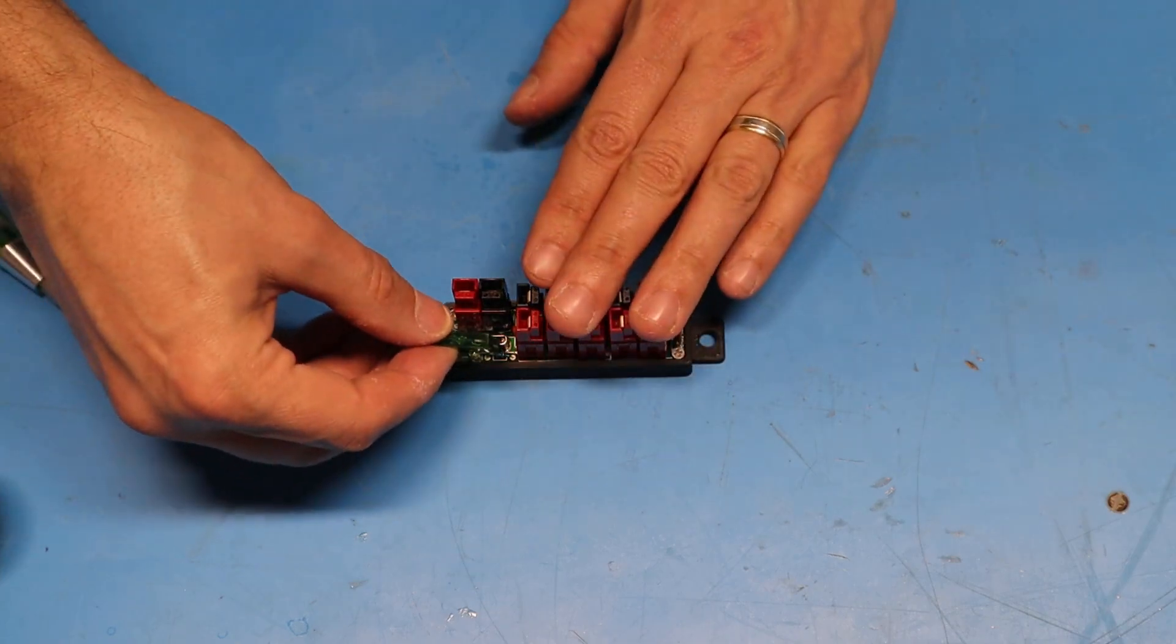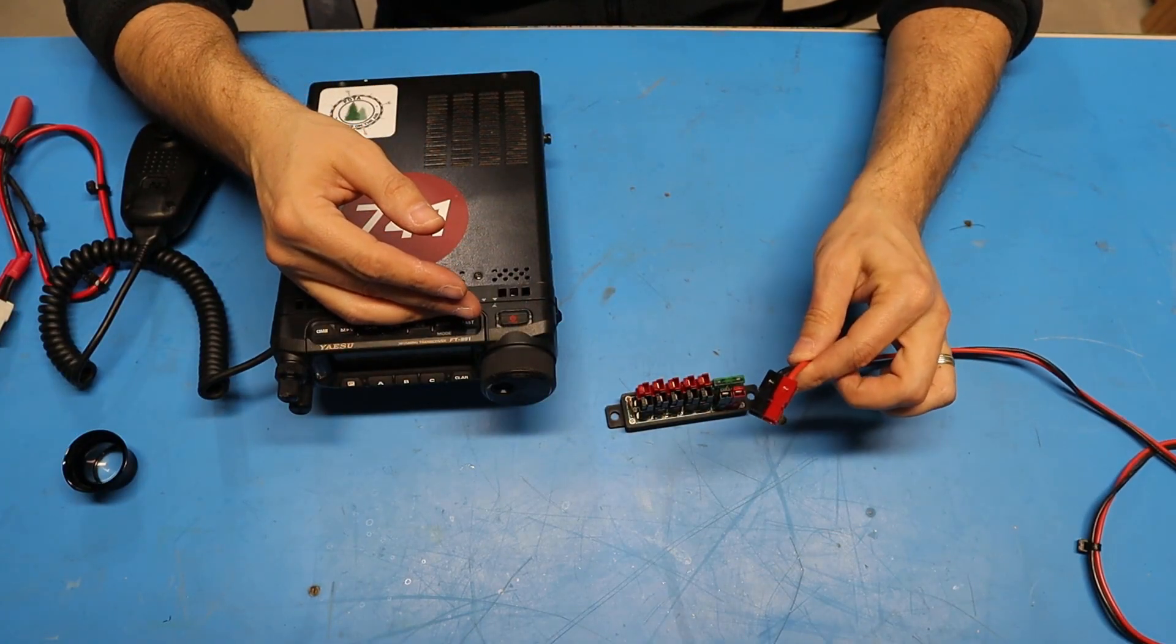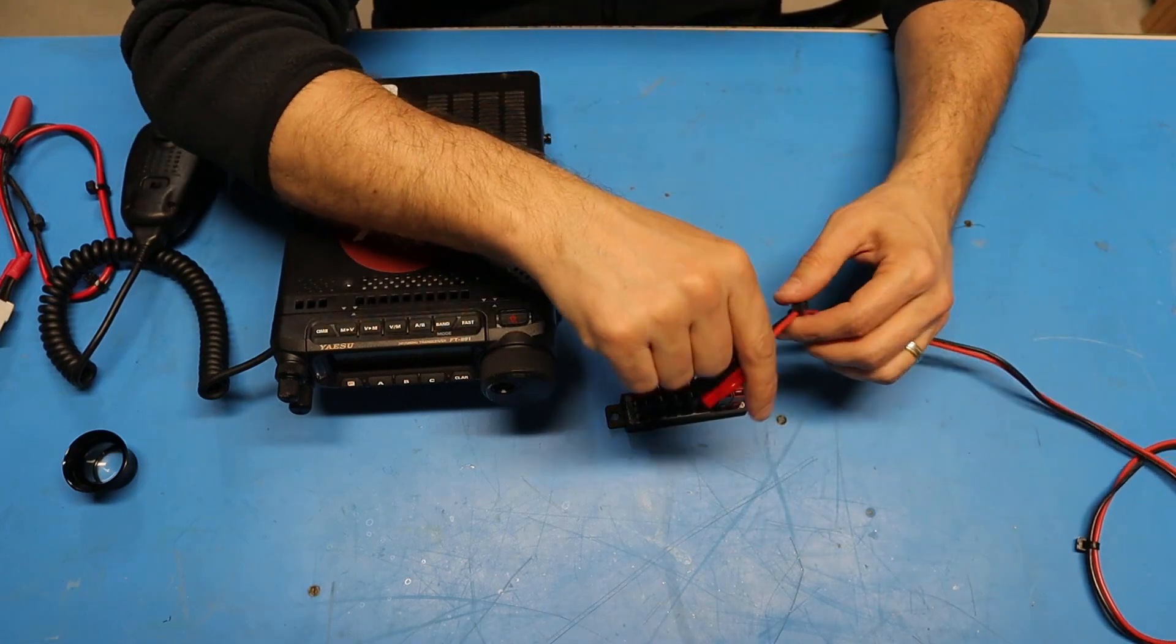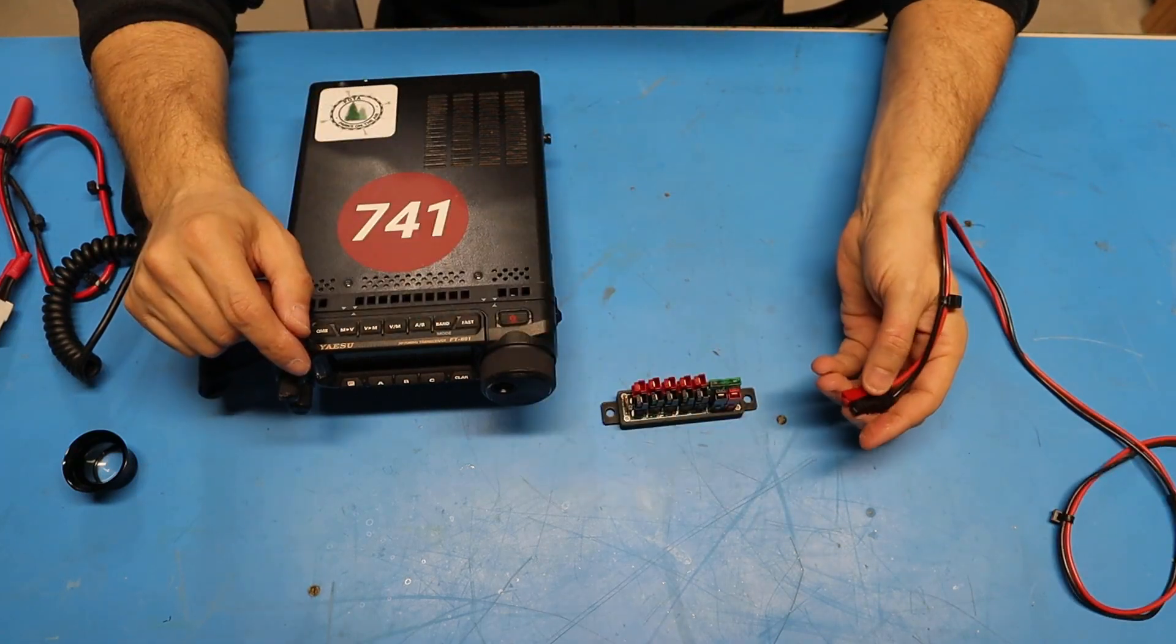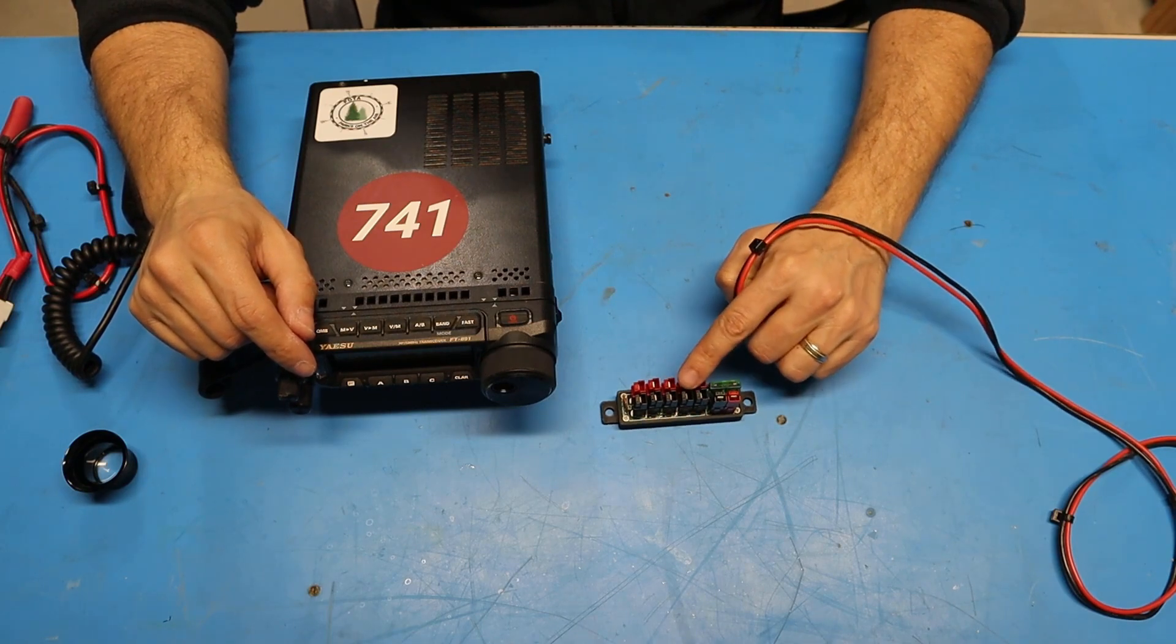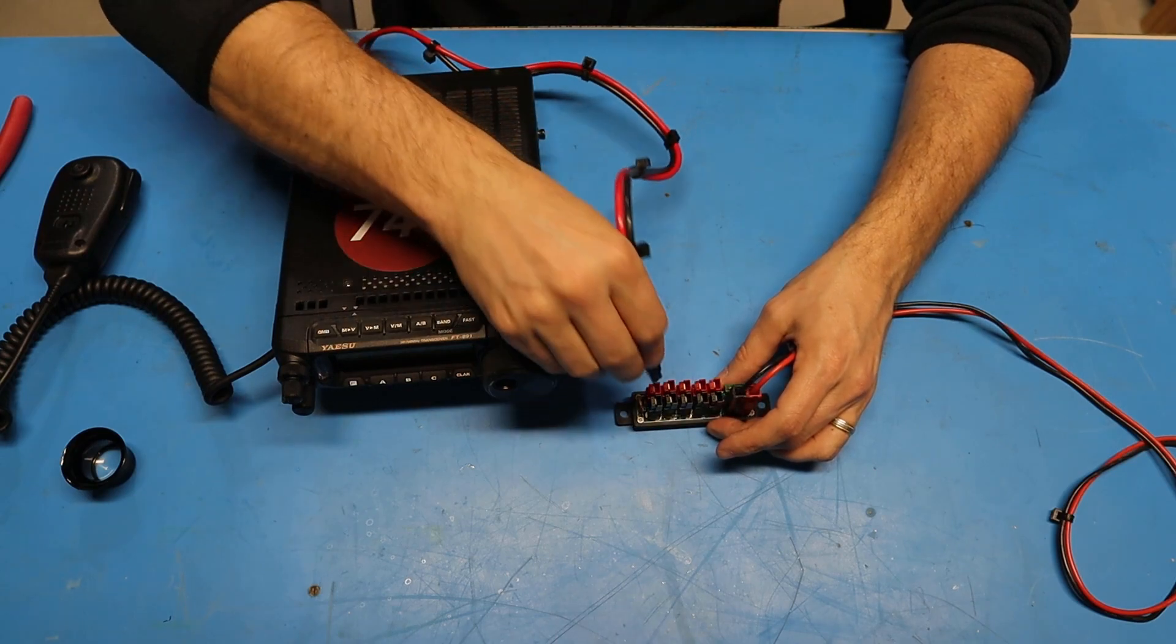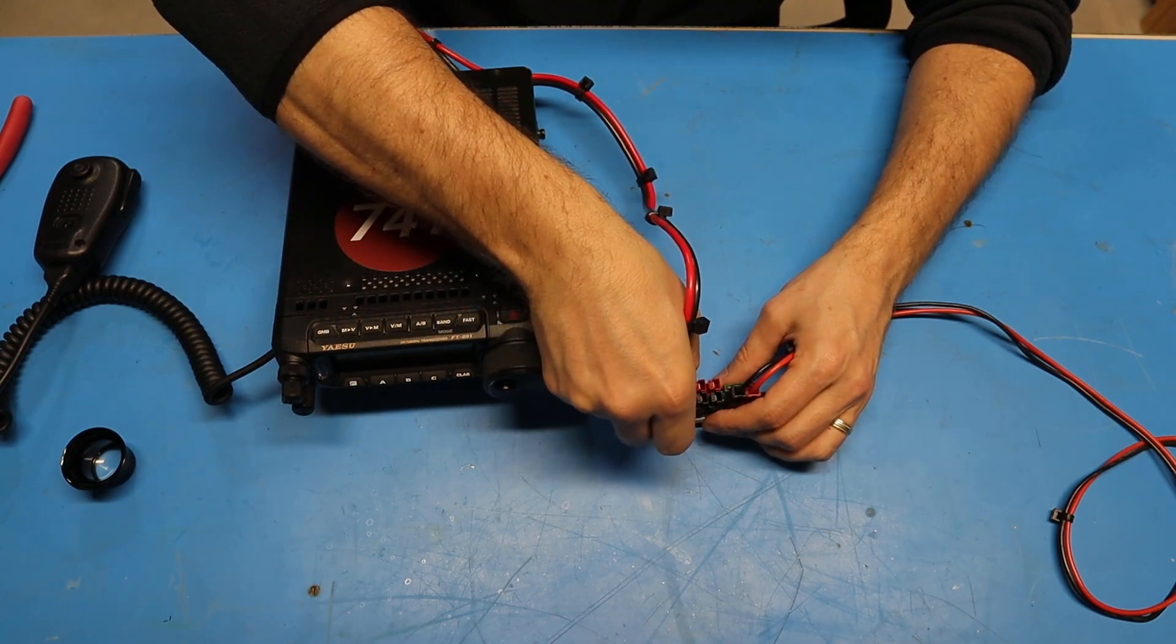The last thing to do is install the fuse. To test out the power strip, I've got a connection from my power supply off camera. I'm going to plug my power supply into the terminal that's closest to the fuse here and perpendicular to the others. Now I'll plug in my Yaesu FT891 and make sure we can power it up.